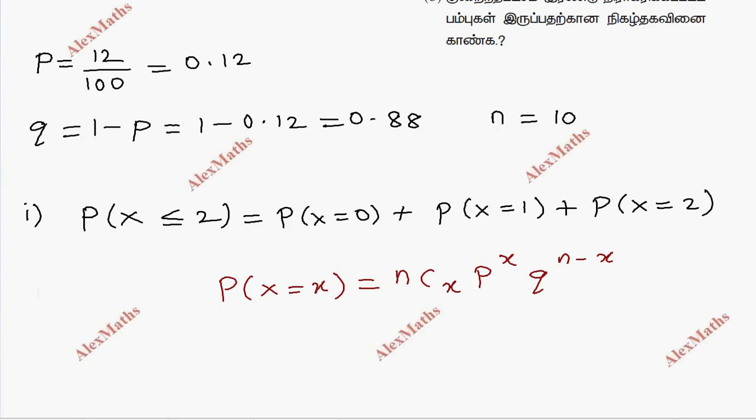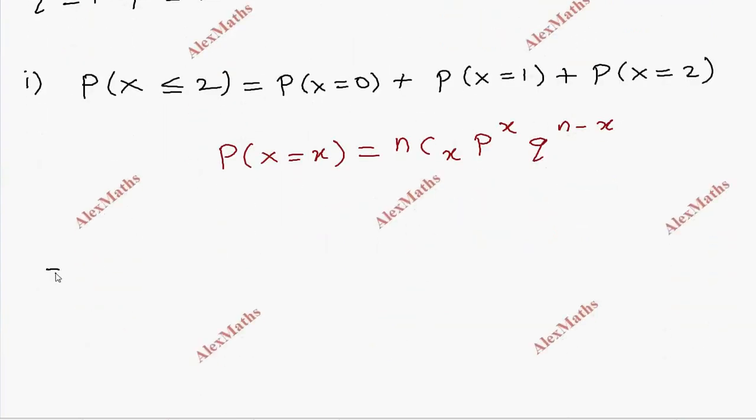Now x equal to 0. This is equal to 10. So 10c0, P equal to 0.12 whole power 0, 0.88 whole power 10 minus 0. Plus P of x equal to 1, 10c1, 0.12 whole power 1, 0.88 whole power 9. Plus 10c2, 0.12 whole power 2, 0.88 whole power 8.